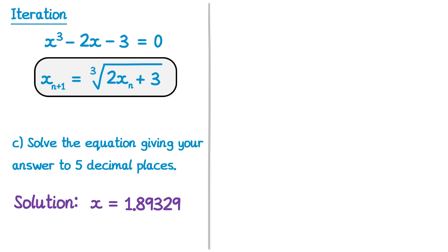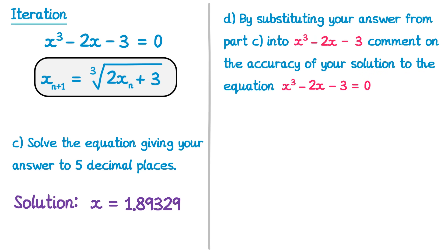So we've managed to find one of the solutions to this equation. A common follow up question is to ask you just how accurate your solution is. It might read something like this. Part d. By substituting your answer from part c into x cubed minus 2x minus 3, comment on the accuracy of your solution to the equation x cubed minus 2x minus 3 equals 0.